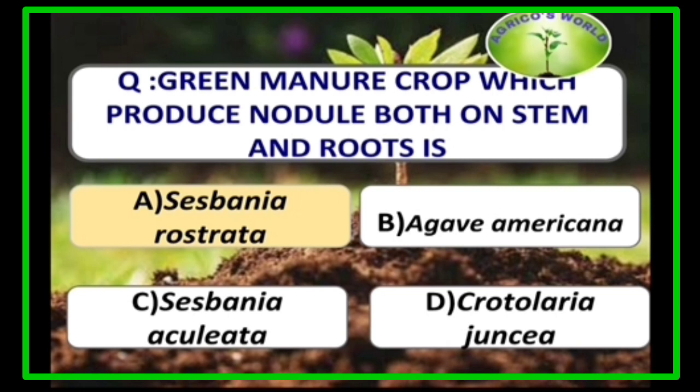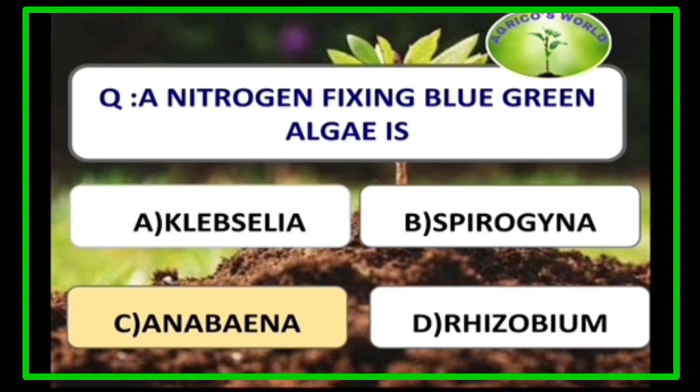The green manure crop which produces nodules both on stem and roots is Sesbania rostrata. A nitrogen-fixing blue-green algae is Anabaena, which fixes nitrogen in heterocysts.